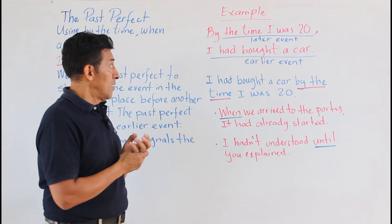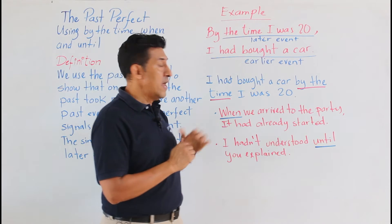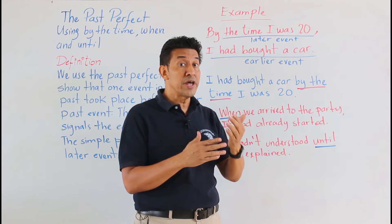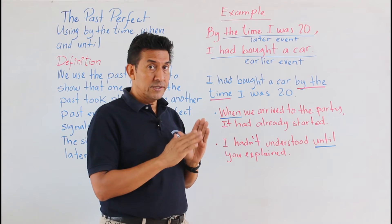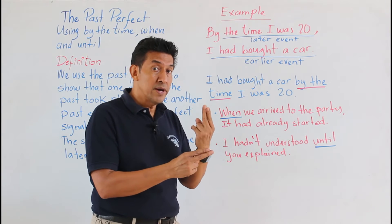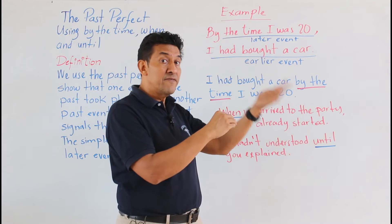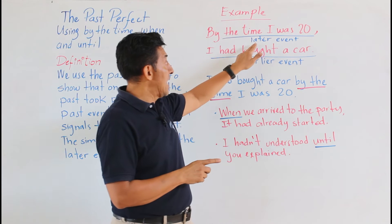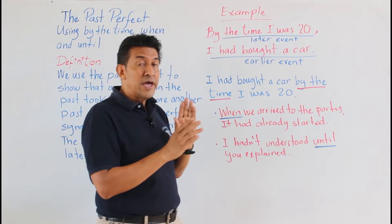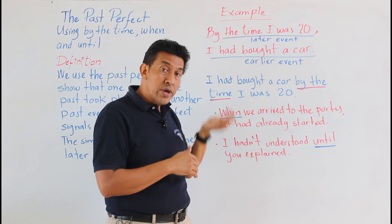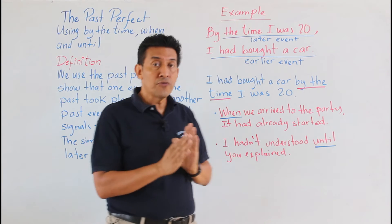Let's see the first example. We have this example. We underline two ideas. If you see, we have a later event and we have an earlier event. In the past perfect we always have two events: one event that comes first and another event that comes later. We call them the later event and the earlier event.